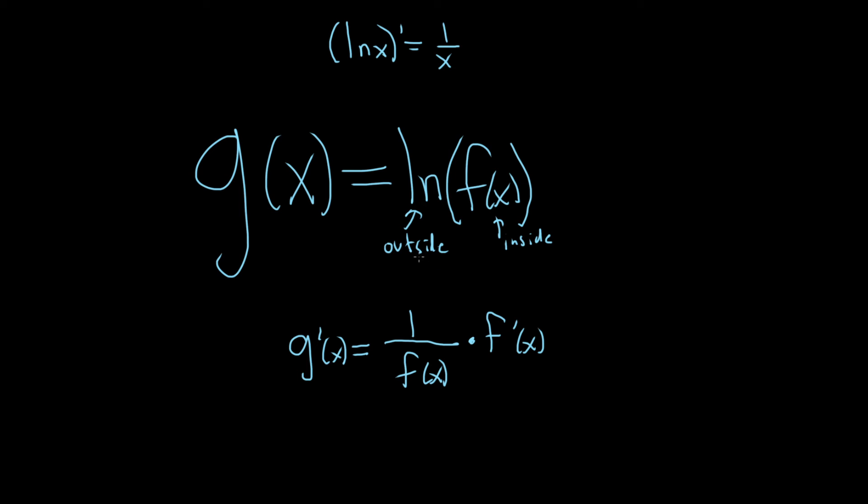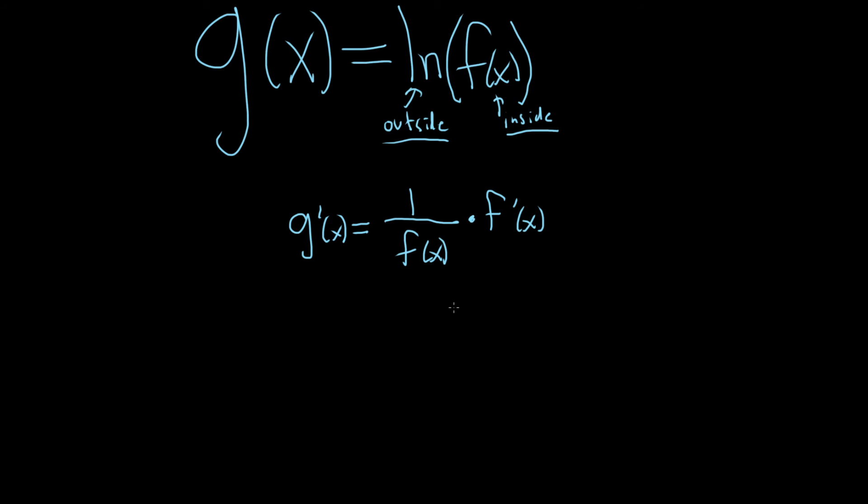So again, you take the derivative of the outside, you leave the inside untouched. So that's 1 over f of x. And then you multiply by the derivative of the inside. So we have g prime of x.